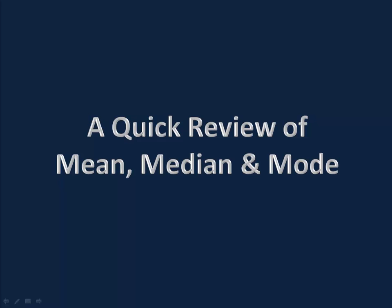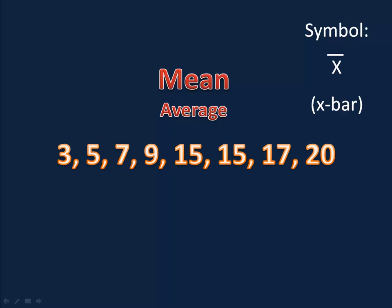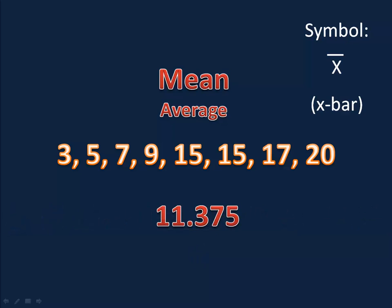Let's begin with a quick review of mean, median, and mode. The mean is the average. The symbol for the mean is x bar, x with a line over the top of it. To calculate the average, or the mean, we simply add up all the numbers that we have and divide by how many there were. In this case, there were eight numbers, so we add them all up and divide by eight. That gives us our mean of 11.375.